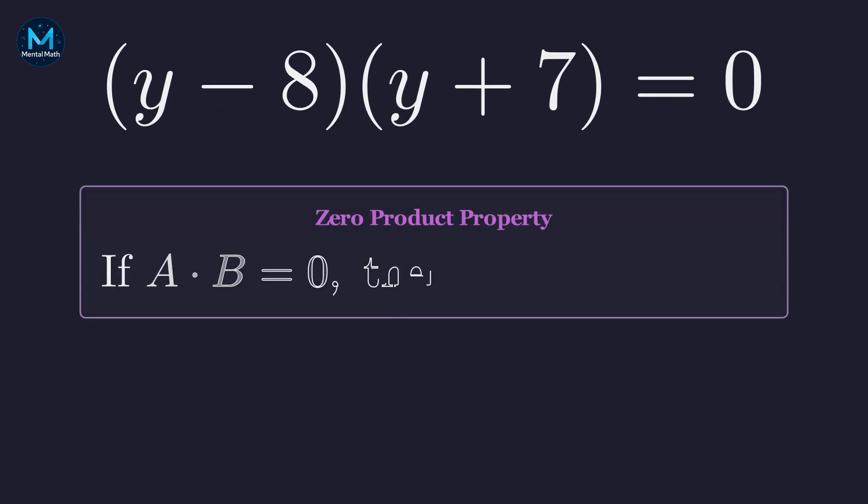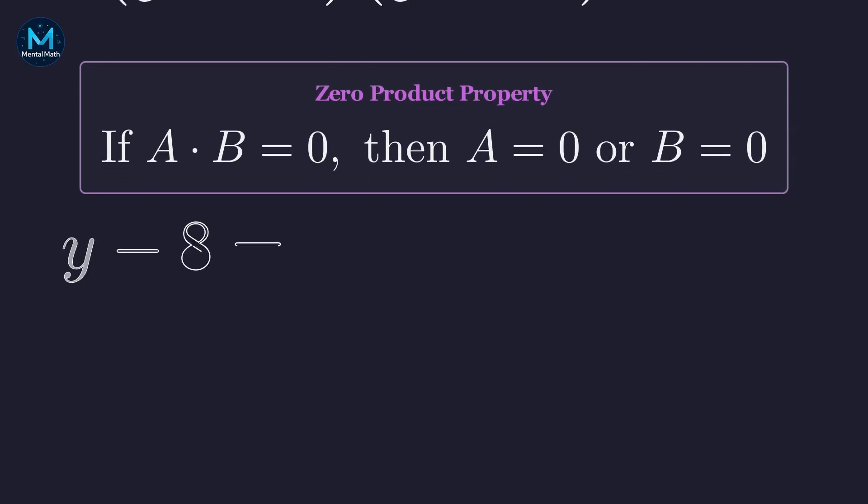Now we can use the zero product property. If a product equals 0, then one of the factors must be 0. This gives us two simple equations for y. So y equals 8 or y equals negative 7.